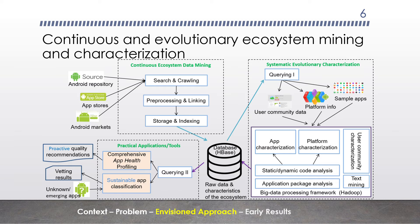As shown in this overview figure, the overall idea is as follows. The continuous ecosystem mining infrastructure on the top right is dedicated for data collection, storage, and analysis. It offers high-efficiency data processing and access for data users such as the characterization analysis and different kinds of applications and tools built on top of the characterization results. The systematic evolutionary characterization module focuses on empirical investigations, addressing key research questions about ecosystem evolutionary dynamics. Based on the continuous characterization results, we can then develop an application health profile that provides developers with recommendations towards proactive quality and sustainable app security classification with slow performance deterioration.